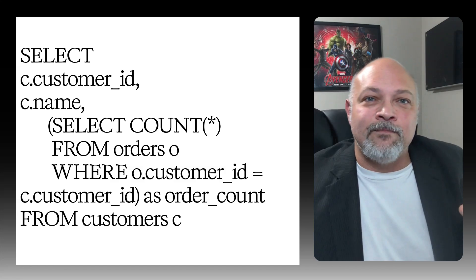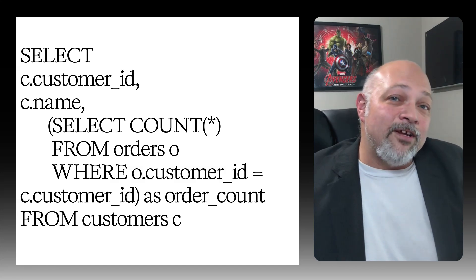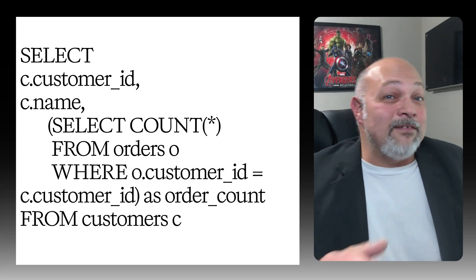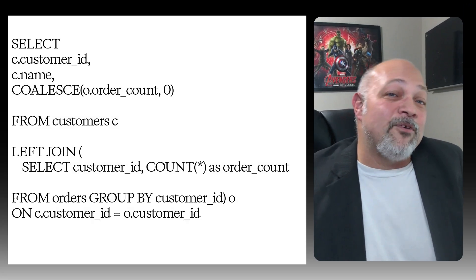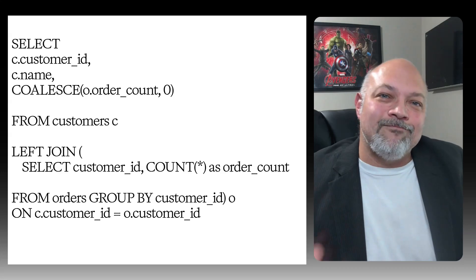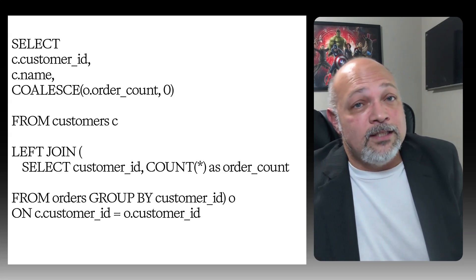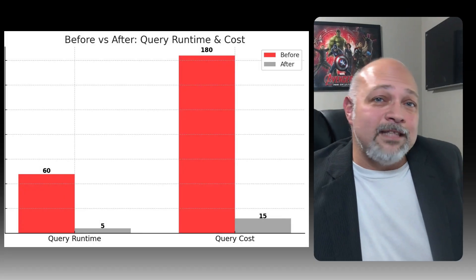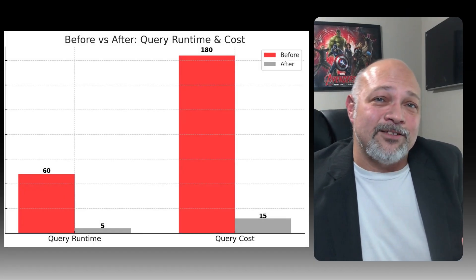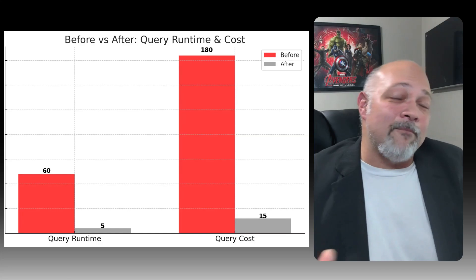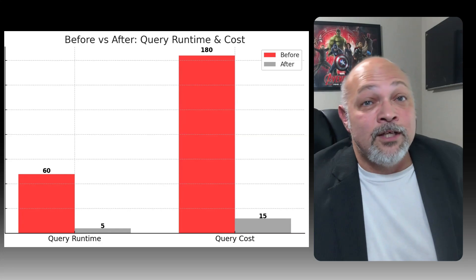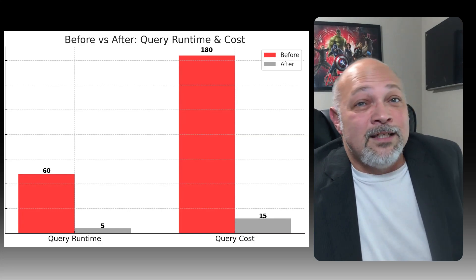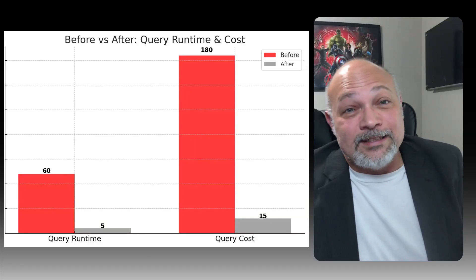Here's a nested loop disaster. Take a look at this code. For every customer, you scan the orders table. So when we have 10,000 customers times 100,000 orders, we have 1 billion operations going on. Here's an example of refactored code that really helps lower the cost of that same query — and you get the same results. Same result, 10,000 times faster. The chart shows runtime dropping from 60 minutes to 5 minutes, and costs dropping from $180 to $15 for running the same query. Senior engineers think in joins, not loops.